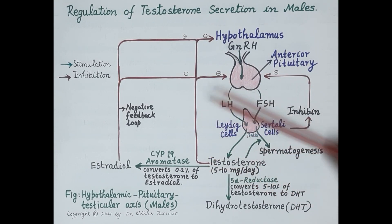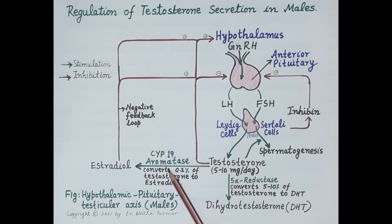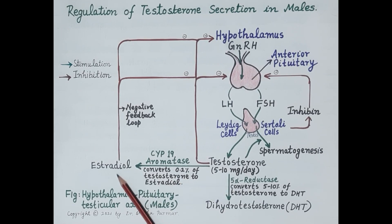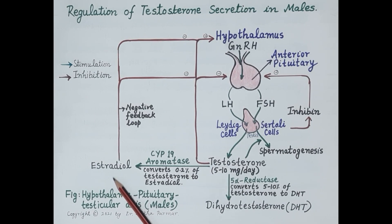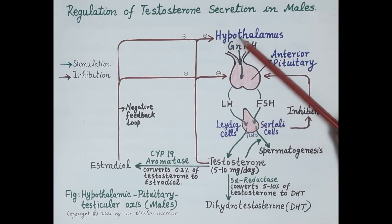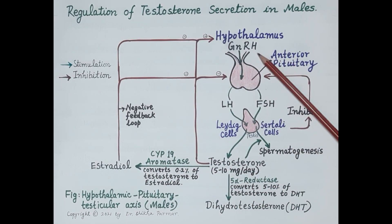Apart from this, the cytochrome P450 aromatase enzyme in the testes, liver, and adipose tissue converts around 0.2 percent of testosterone to estradiol. Estradiol is a very important inhibitor of gonadotropin secretion and plays a very important role in feedback inhibition. A rise in estradiol levels inhibits the release of gonadotropin-releasing hormone from the hypothalamus.